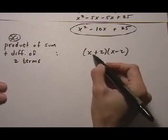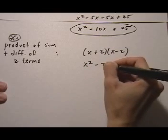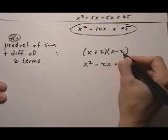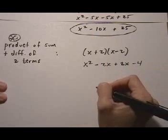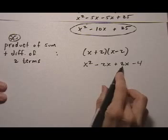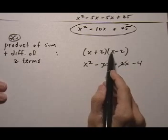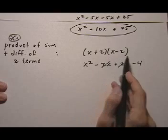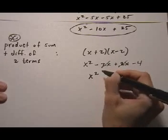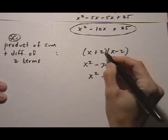Let's FOIL it out: x times x is x², -2x, +2x, -4. Look at the middle terms: -2x + 2x cancels out. Anytime you have a sum and difference of the exact same two terms, the middles cancel out.